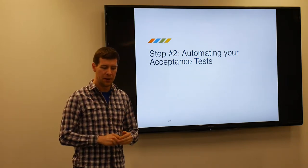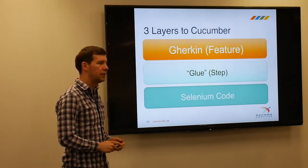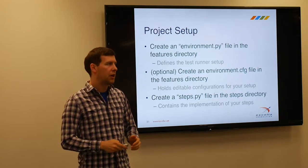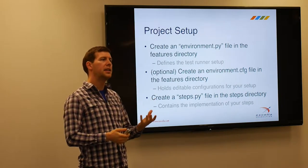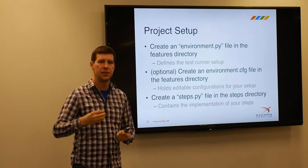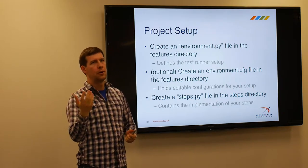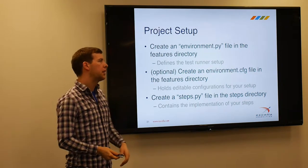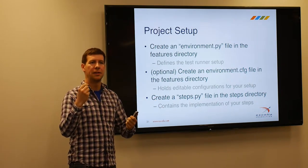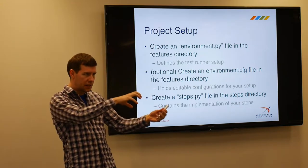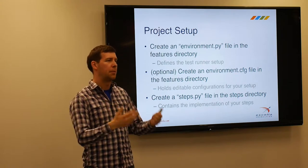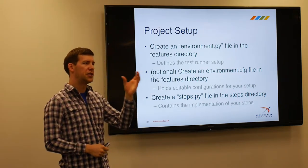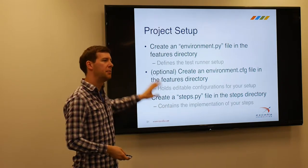We've written our acceptance test — that was straightforward. Now let's go to step two and actually automate this. If you remember our three layers: we talked about the Gherkin feature level. Now we're going to talk about the glue code. First, a little project setup: we need to create an environment file — this is where all before and after conditions go, where you set up your project. You can also create a configuration file for things you don't want hard-coded. And we'll create a steps.py file — that's your step runner where we put step definitions.